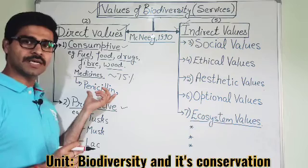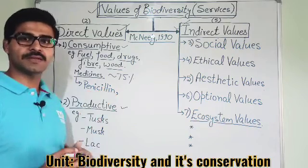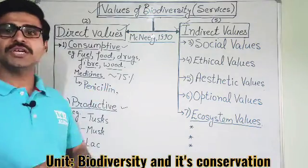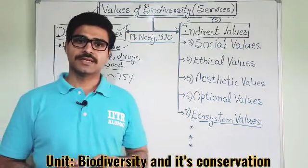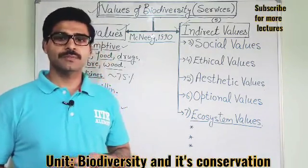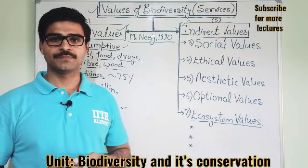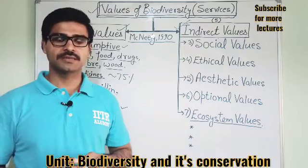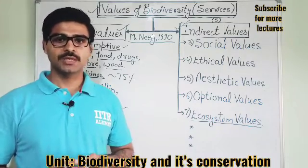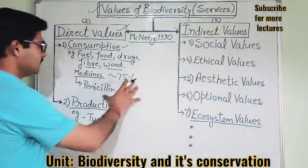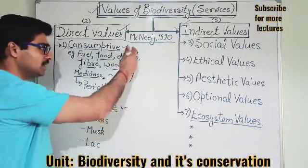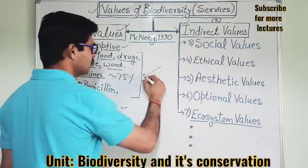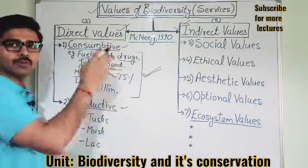For example, the well-known drug penicillin is obtained from fungi. Tetracycline is obtained from bacteria. Vincristine, which is an anti-cancer drug, is obtained from plants. In the same way, we are getting different products on a daily basis. So this value of biodiversity is known as consumptive value.